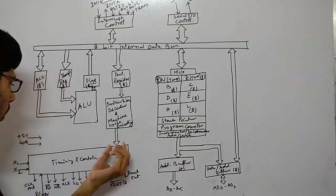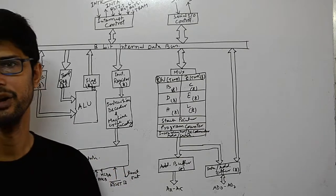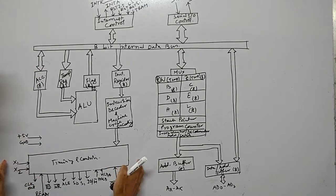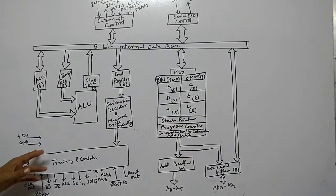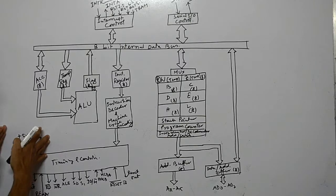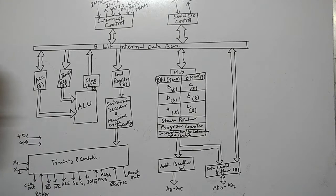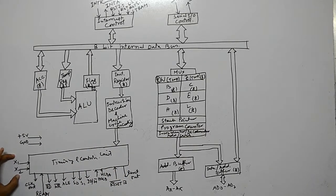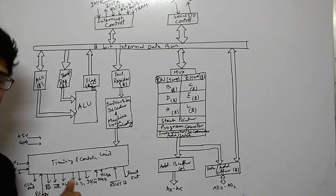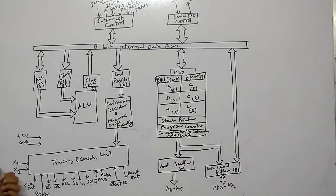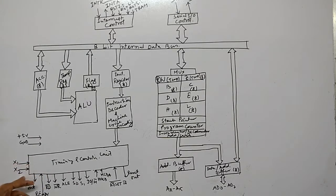After the instruction decoder and machine cycle encoding, everything goes to the timing and control unit. Before discussing it further, the power supply unit provides +5V and ground required for 8085 operation. The timing and control unit has two pins, X1 and X2, which act as a clock generator for the 8085 itself — a crystal generates the frequency, which enters through X1 and X2.